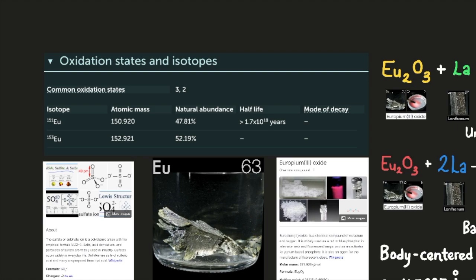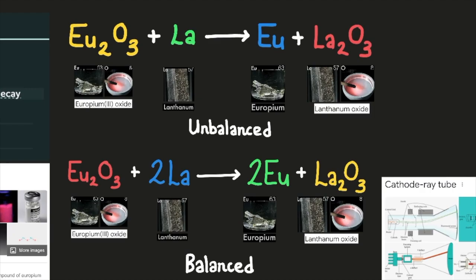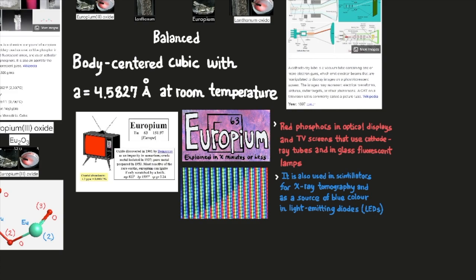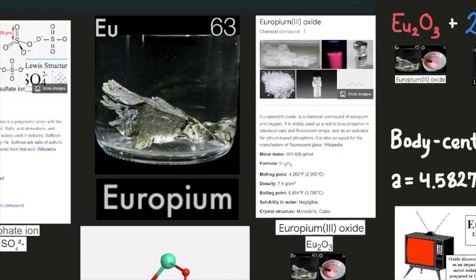Europium is usually separated from other rare earths by reducing it to the plus 2 oxidation state and precipitating it with sulfate ions. The metal has been prepared by electrolysis of diffused halides and by reduction of its oxide by lanthanum metal, followed by distillation of the europium metal. Europium exists in a single allotropic structural form. It is body centered cubic with A equals 4.5827 angstroms at room temperature. The primary use of europium is in red phosphors in optical displays and TV screens that use cathode ray tubes and in glass for fluorescent lamps. It is also used in scintillators for x-ray tomography and as a source of blue color in light emitting diodes, LEDs.